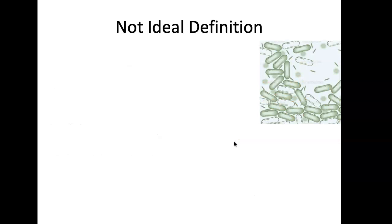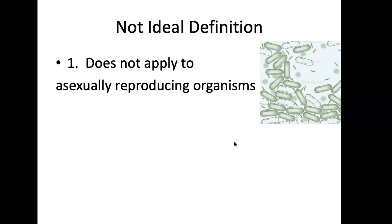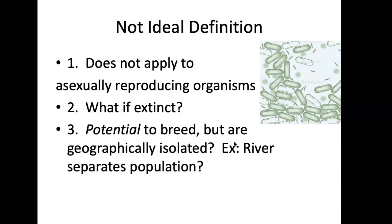However, that is not an ideal definition. We talk about them being able to interbreed, but that doesn't really apply to asexually reproducing organisms like bacteria — those are just dividing. We also talk about them as a group of living organisms, but what if they're extinct? And if they have the potential to breed but are just isolated and never do — if you put them together they would. So it gets very complicated to think about what the perfect definition is.